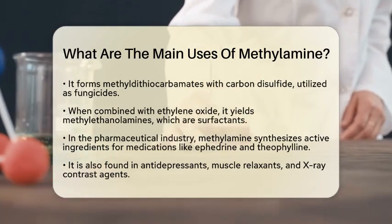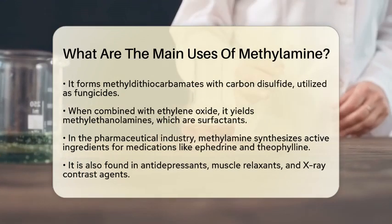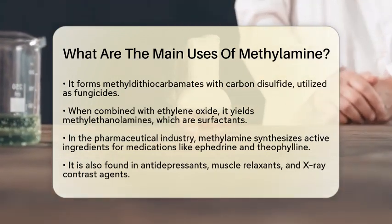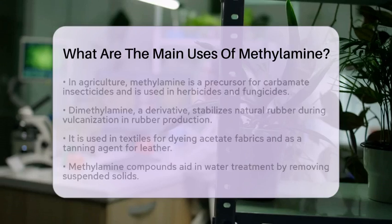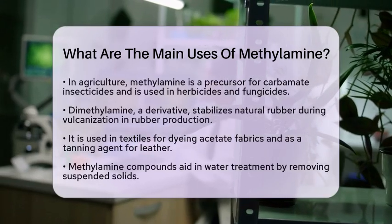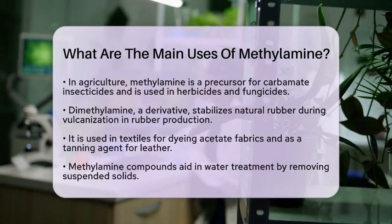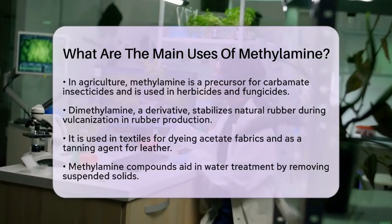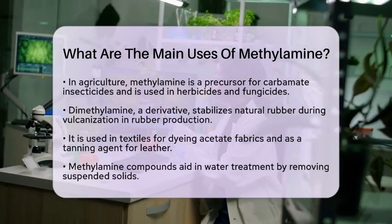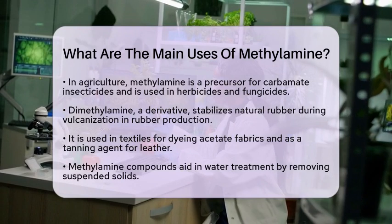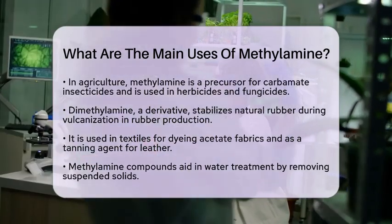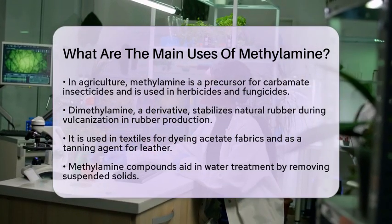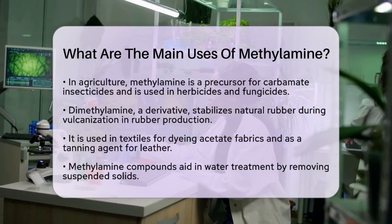In industrial processes, methylamine has various applications. For rubber production, dimethylamine, a derivative of methylamine, stabilizes natural rubber during the vulcanization process. In textiles, it is used for dyeing acetate fabrics and as a tanning agent for leather. In water treatment, compounds derived from methylamine help remove suspended solids during purification.